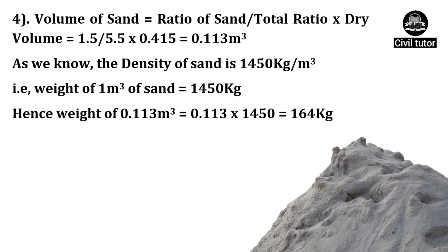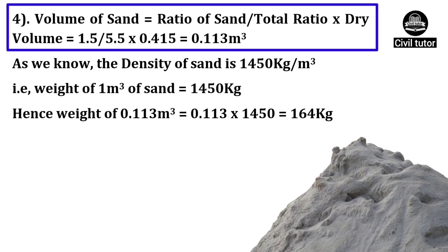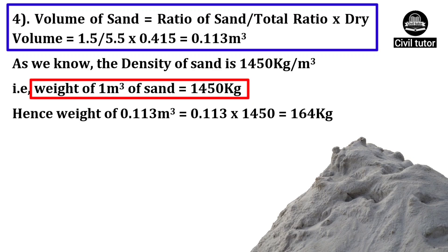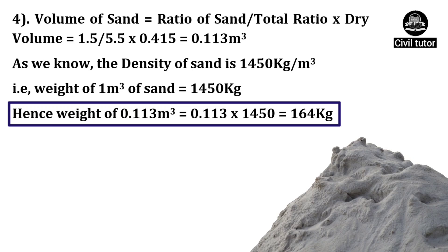Now, coming to the fourth step, in which we need to calculate the volume of sand, which is given by the formula: ratio of sand divided by total ratio, multiplied by dry volume. The ratio of sand is 1.5, the total ratio is 5.5, and the dry volume is 0.415. On substituting these values, the volume of sand will be equal to 0.113 meter cube. Since the density of sand is 1450 kg per meter cube, the weight of 0.113 meter cube of sand will be equal to 0.113 × 1450 = 164 kg.